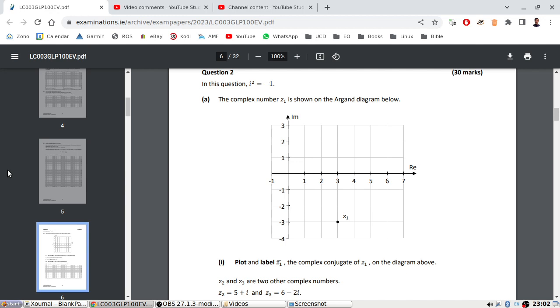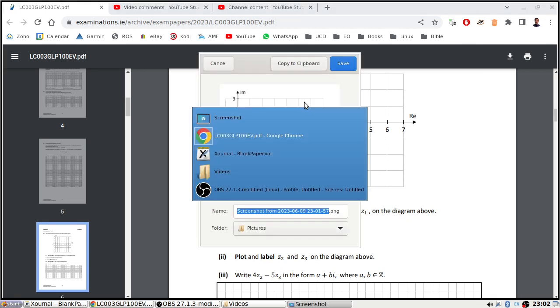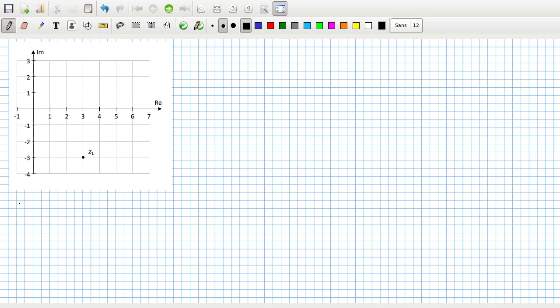Plot and label Z1 conjugate and the complex conjugates in the diagram. Z1 would be 3 minus 3i. Its conjugate would be 3 plus 3i, which would be up here.